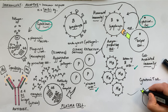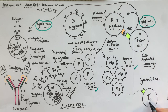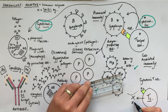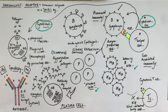Cytotoxic T cells bind to virus antigen presented on any body cells infected with a virus. For example, if an epithelial cell lining the trachea is infected with coronavirus, to stop the virus replicating we want to damage and destroy those cells. The cytotoxic T cell recognizes the virus antigen on the cell membrane of infected cells and releases chemicals that directly kill the virus-infected body cell, limiting the spread of the virus.